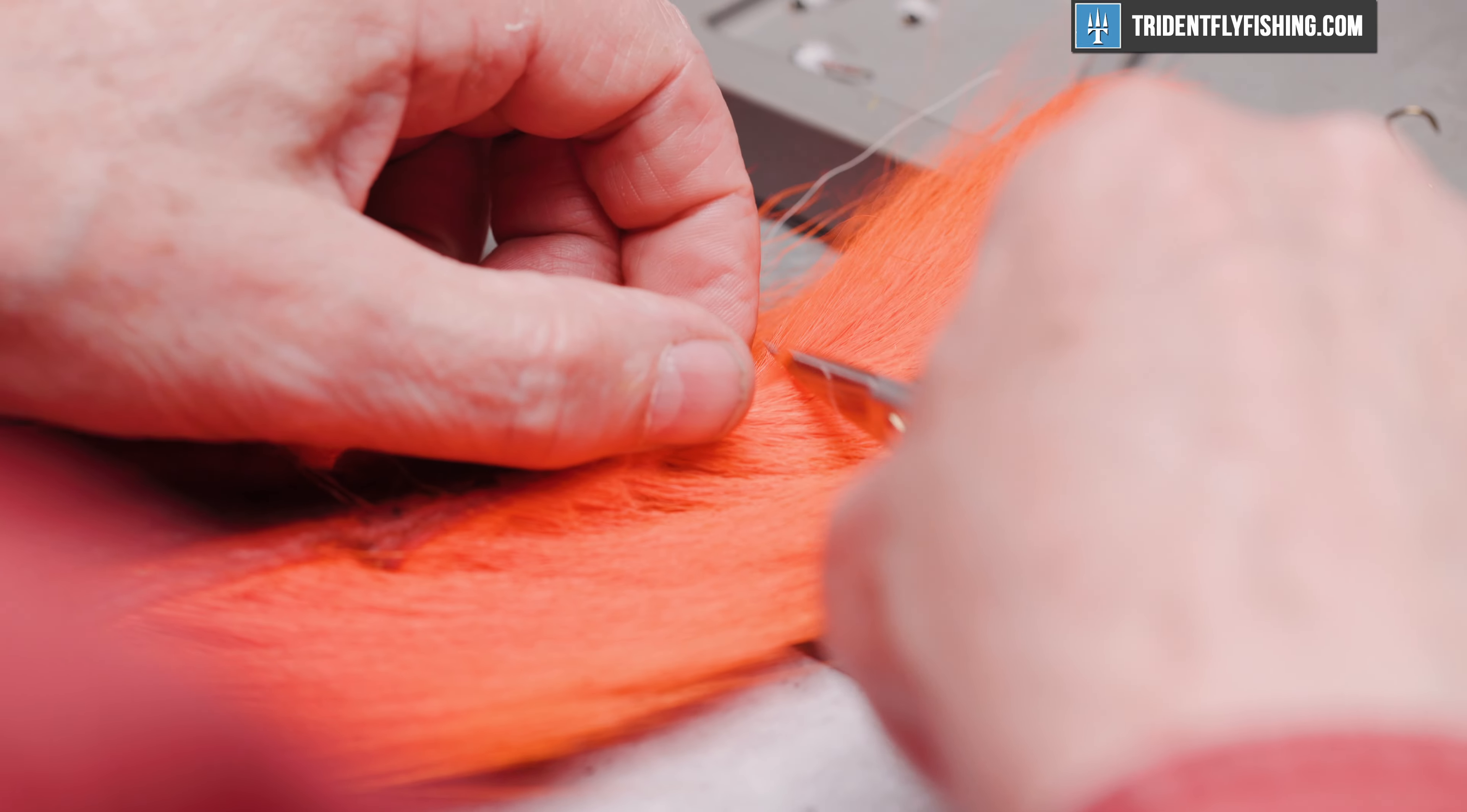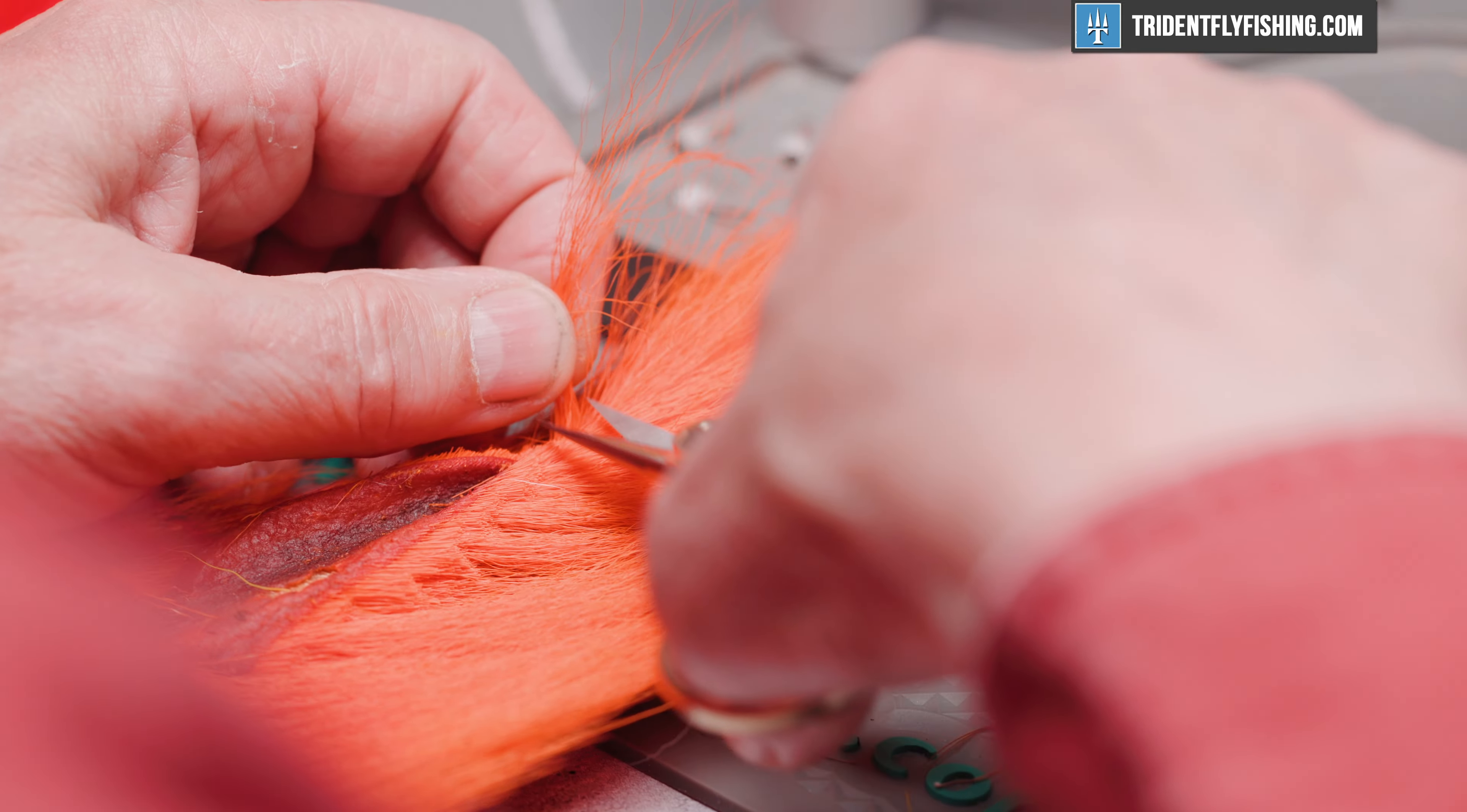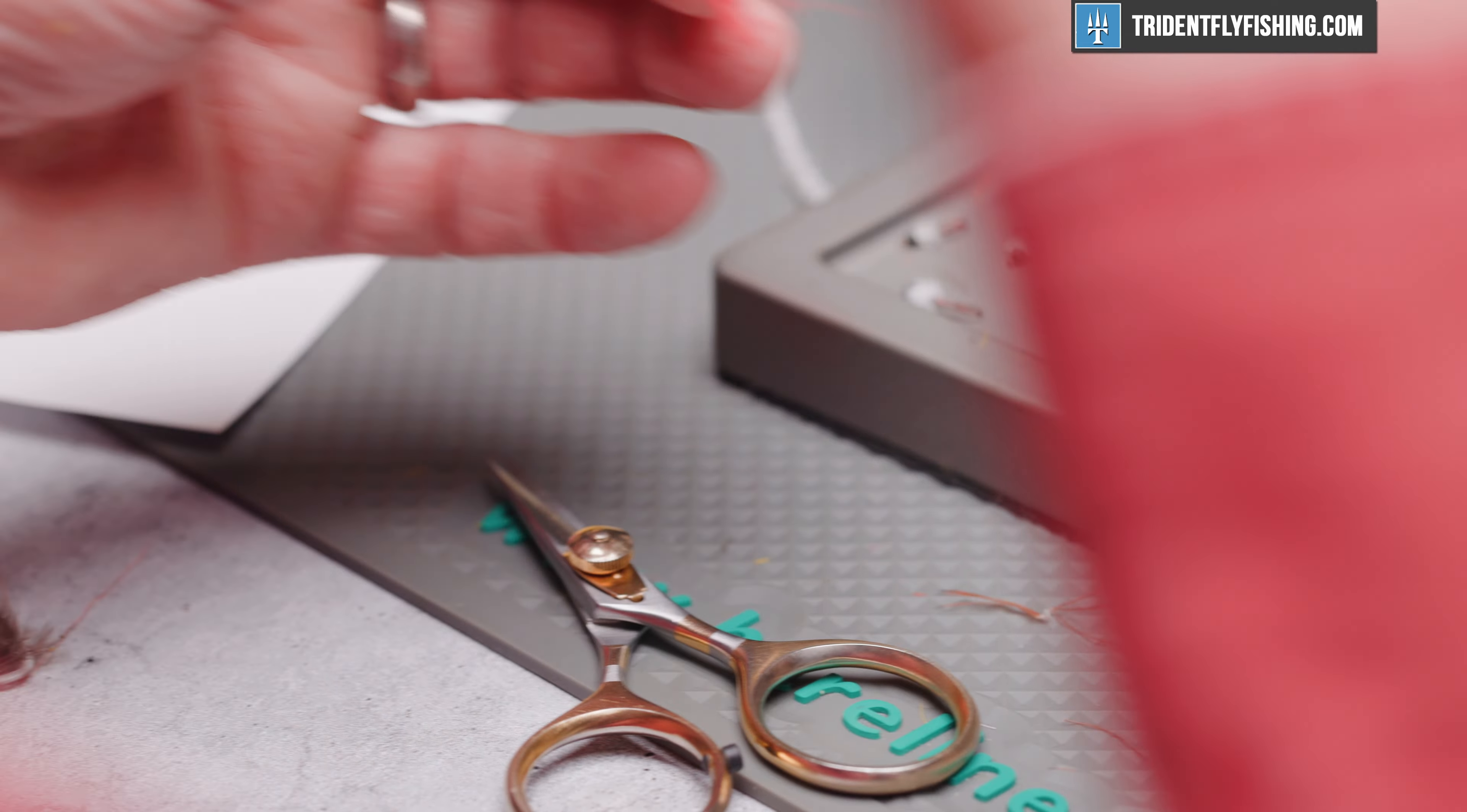And the next colors are going to be mixed. It's going to be some red and some orange. But about the same amount. We want it really sparse. After this, we still have one more material to tie in.